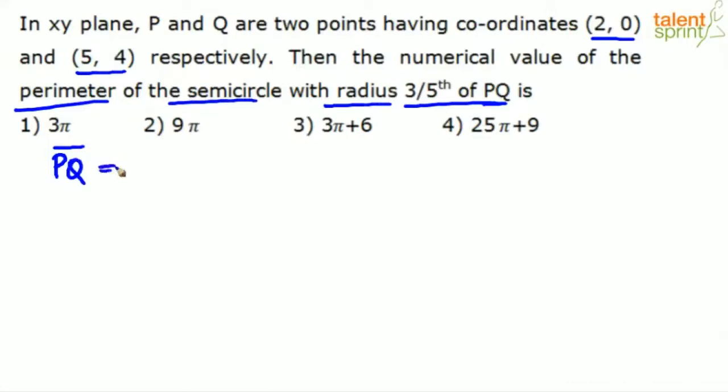So going by that, it can be taken here. x₂ minus x₁ or x₁ minus x₂ makes no difference. So x₂ minus x₁: x₂ is 5, x₁ is 2 whole square plus y₂ minus y₁: y₂ is 4 minus y₁ is 0 whole square.